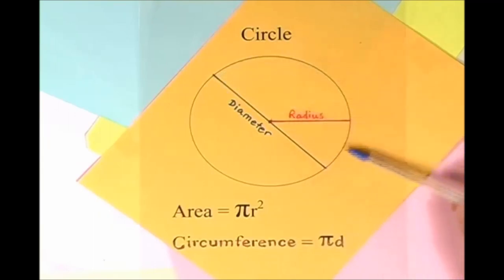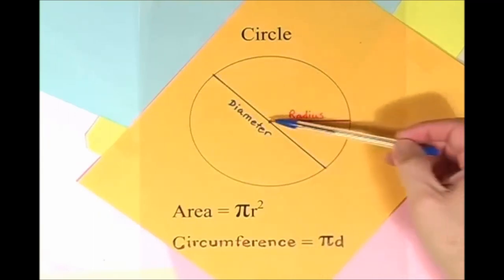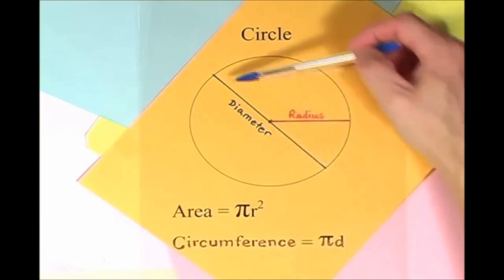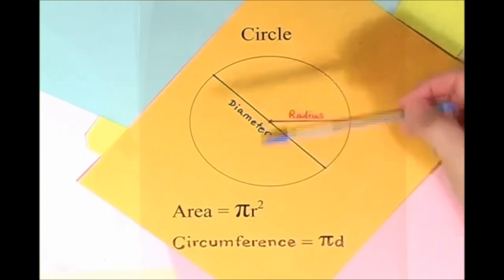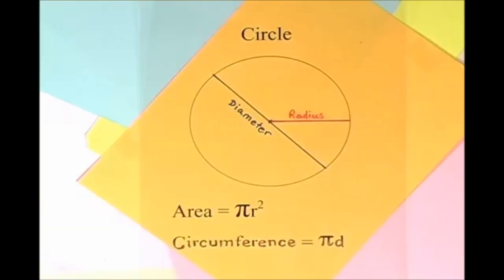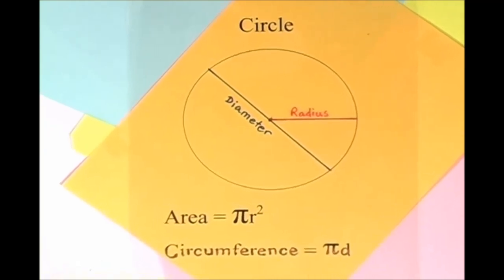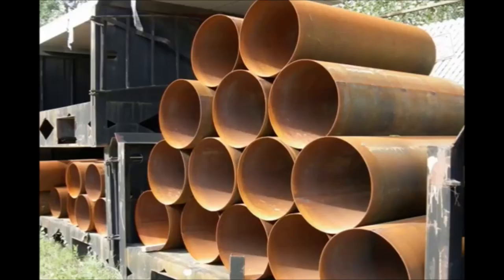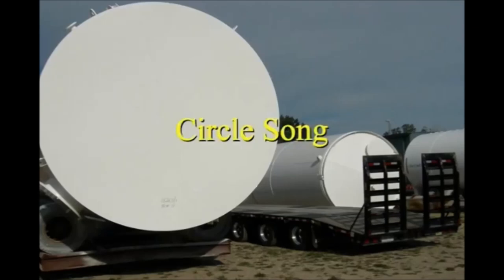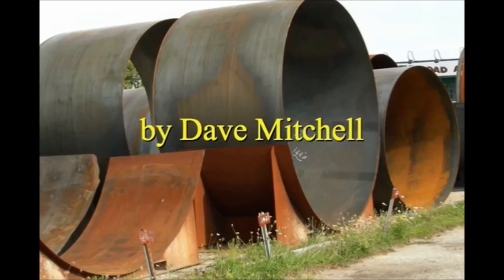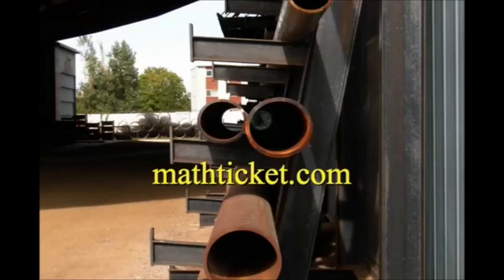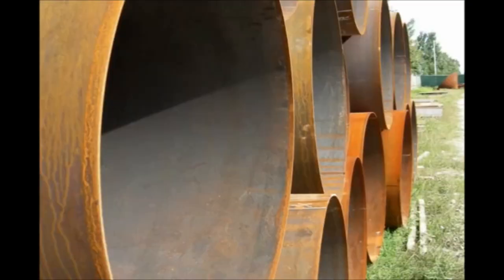Here is a circle, it knows how to get around. It has a radius from center to rim. And its diameter's a line that goes from side to side while passing through the center, now isn't that simple. Pi r squared sounds like area to me, when I need a circumference, I'll just use pi d. Pi r squared sounds like area to me. Here is a circle, it knows how to get around.